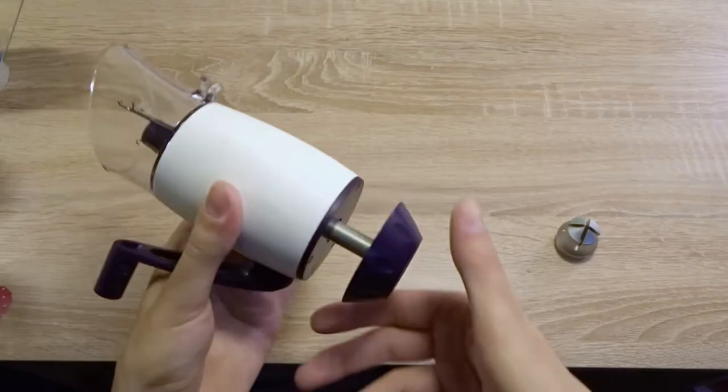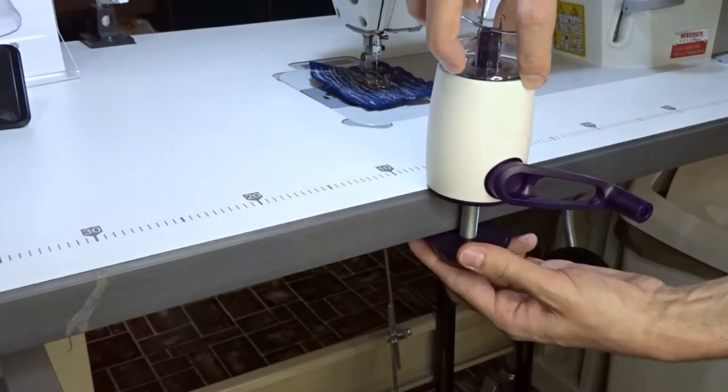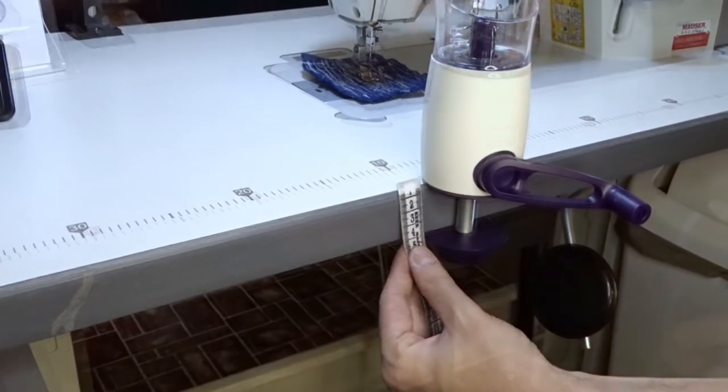The best thing is that you can attach the mill to thick surfaces. For example, the table of my sewing machine is about 4 cm thick and I can easily attach the mill.